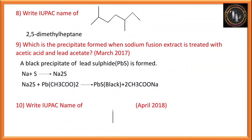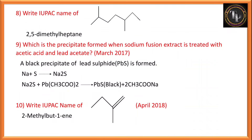Write the IUPAC name of the next compound. When you move from the right side, there is a double bond. Counting from right: one, two, three, four. Second position has a methyl group. So the name is 2-methylbut-1-ene.